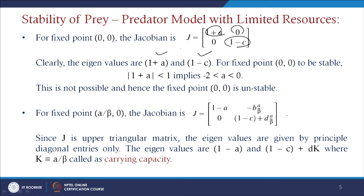For the fixed point (0, 0) to be stable, both eigenvalues must have absolute value less than 1. For the first eigenvalue |1 + a| < 1, we require a to lie between −2 and 0. However, since a cannot be negative (it is the population growth rate), this condition is not satisfied, and the fixed point (0, 0) is unstable.